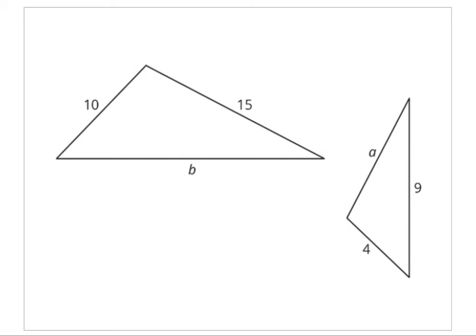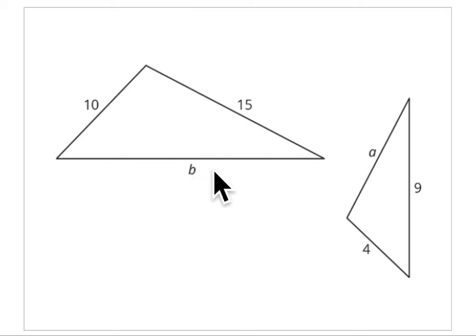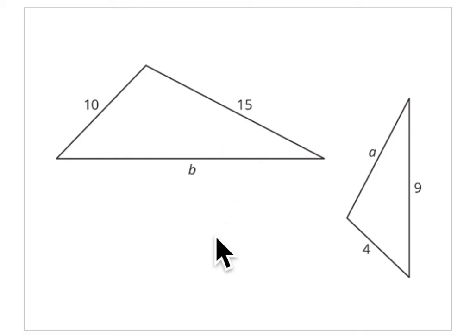These are the practice problems for Lesson 9. In this first problem, it tells you that these two triangles are similar. It asks what's the length of A and what's the length of B. You're going to use the ratios of the sides within each triangle to figure that out.